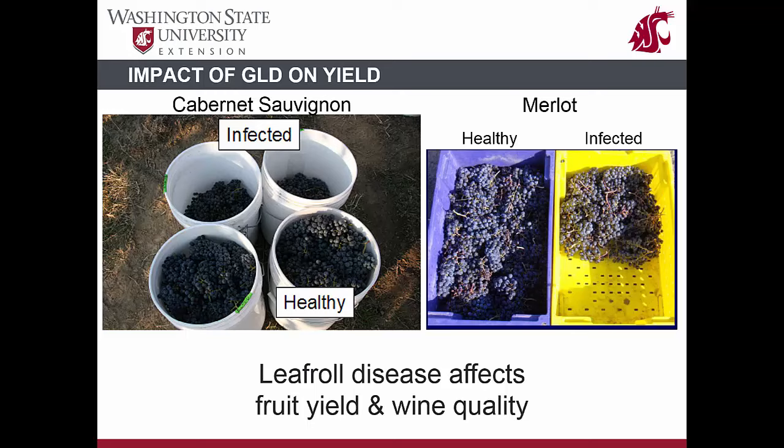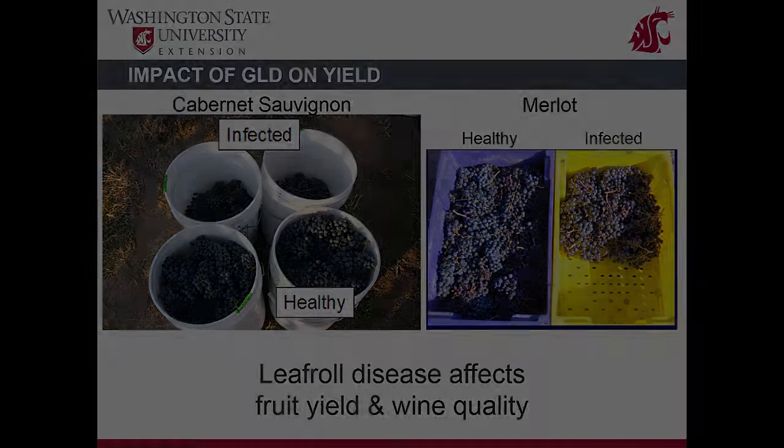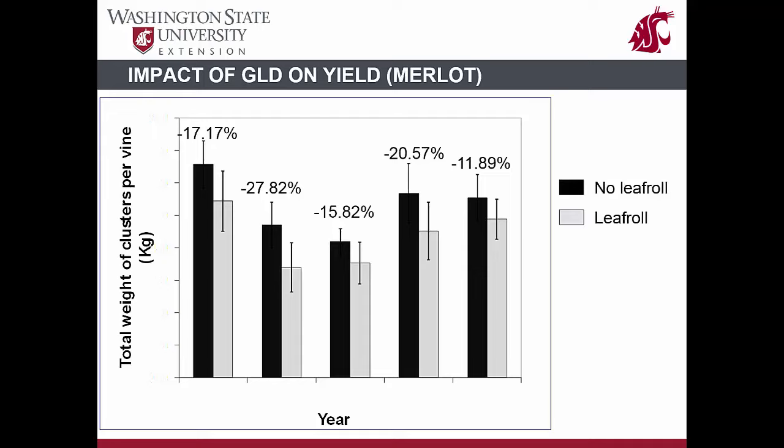These pictures show impacts of leaf roll disease on fruit yield in two red-fruited wine grape cultivars — it is obvious that virus-infected vines give significantly less fruit compared to healthy vines. Reductions in yield due to virus infections are highly variable from season to season. Yield reductions as high as 50% are commonly reported in different cultivars depending on the severity of infection.